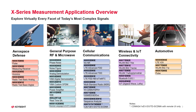In terms of what type of signals the X-app can demodulate, it actually has more than 30 applications to provide essential measurements for specific tasks in general purpose, cellular communications, wireless connectivity, aerospace defense, and automotive industries covering established standards or modulation types. Some of the key ones with license numbers are shown here to give you the idea what X-app can cover.